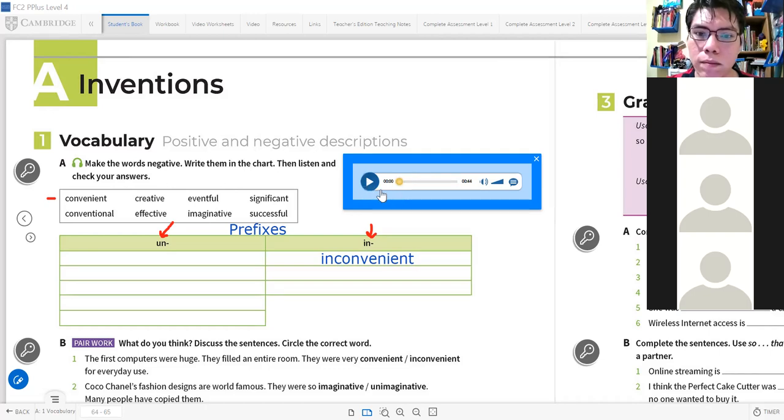Listen. Unit 7 New Ways of Thinking Lesson A Inventions Page 64 Exercise 1 Vocabulary Positive and Negative Descriptions. Unconventional. Uncreative. Uneventful. Unimaginative. Unsuccessful. Inconvenient. Ineffective. Insignificant. Okay, do you have the answers? Yes.